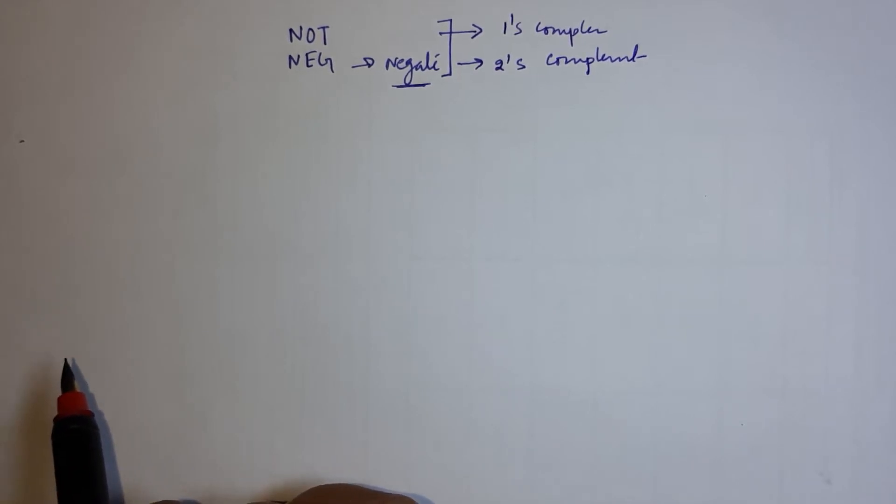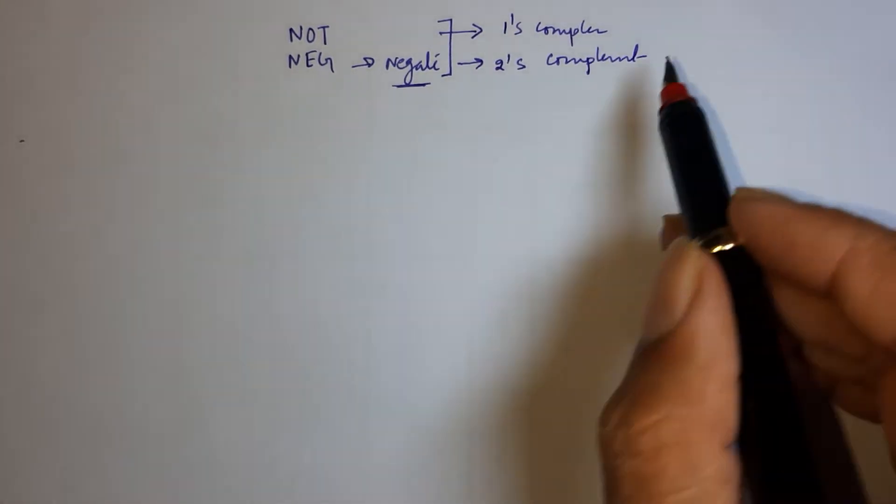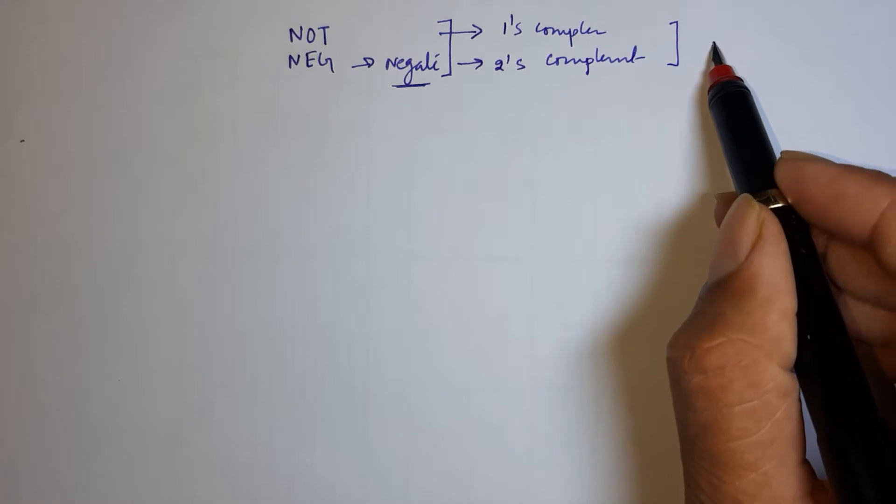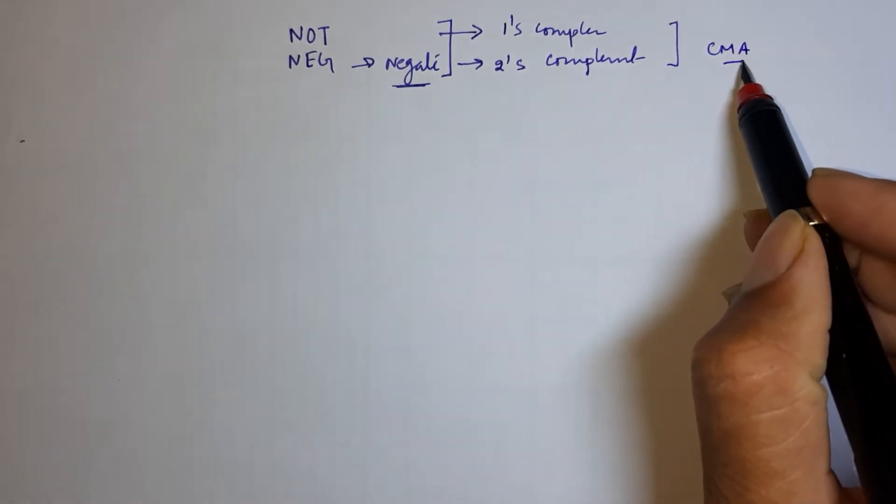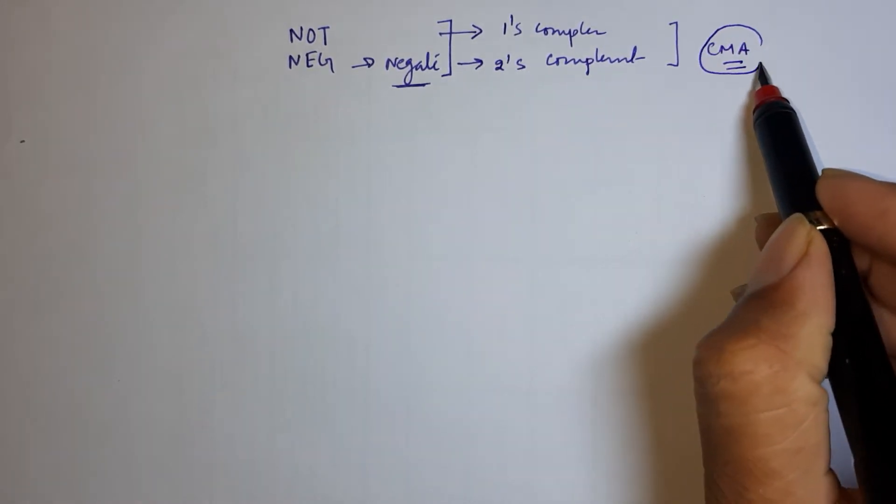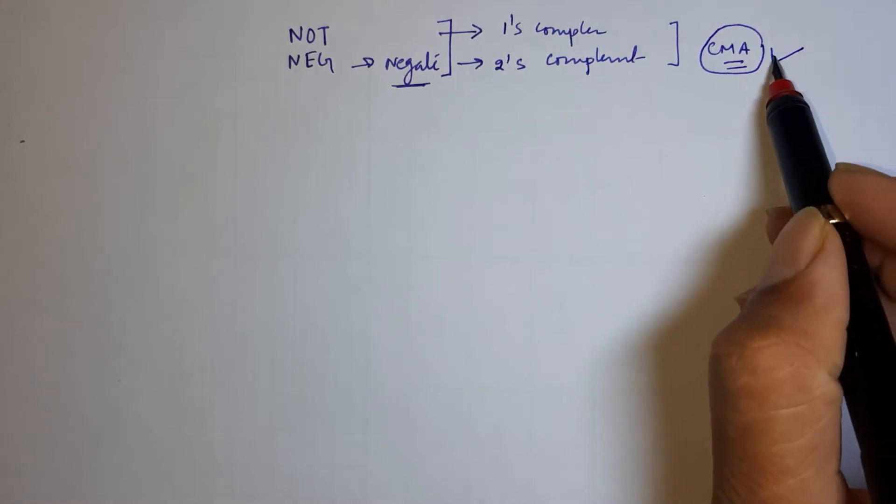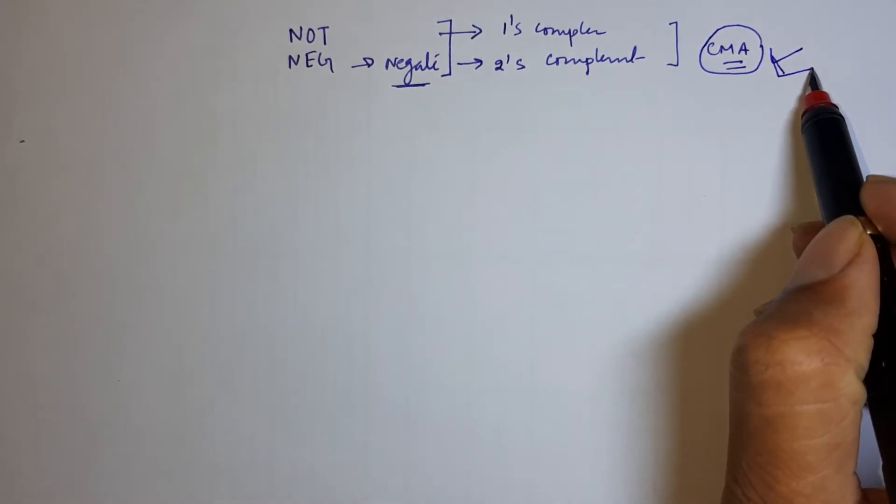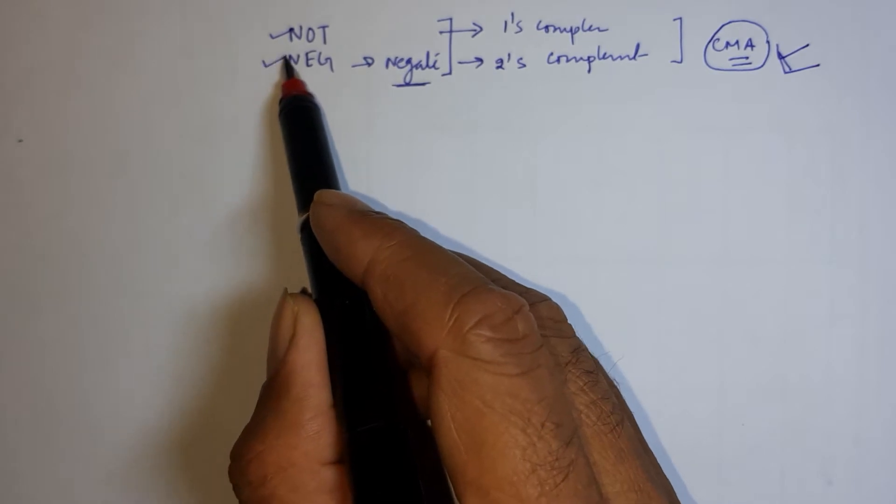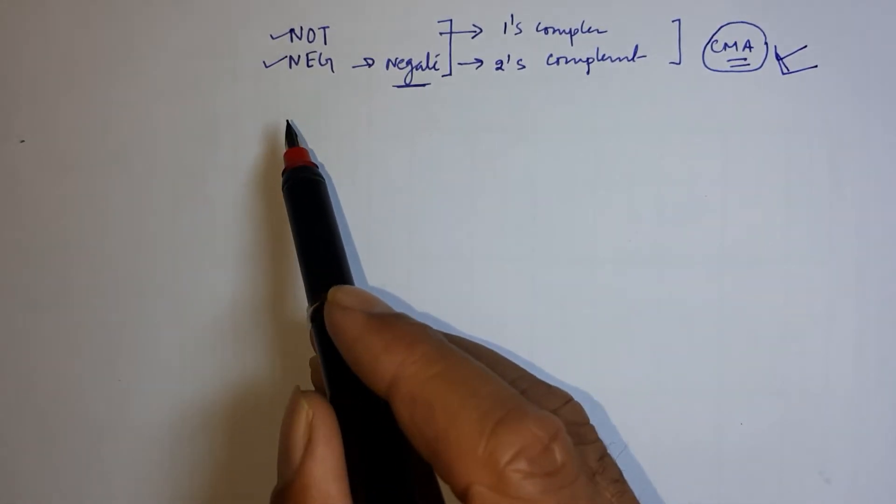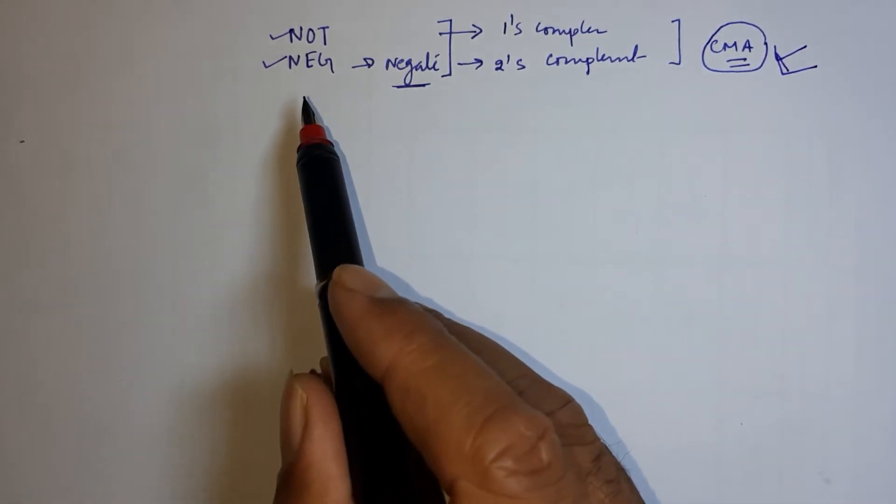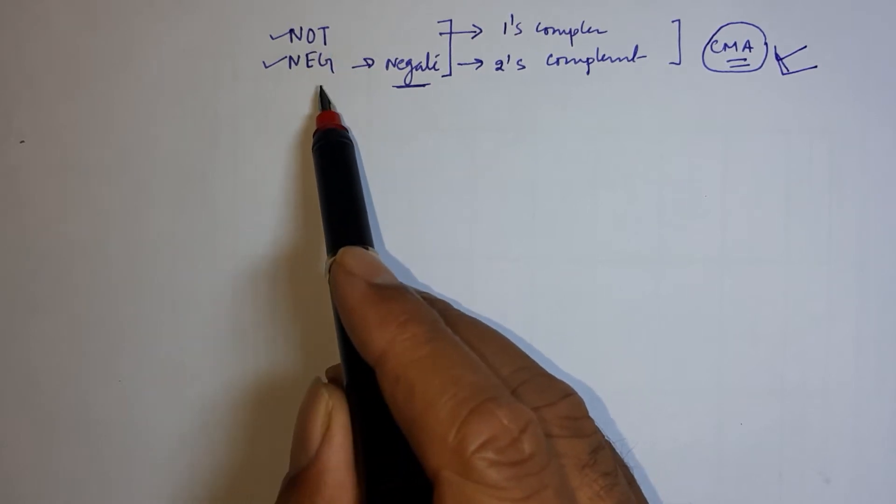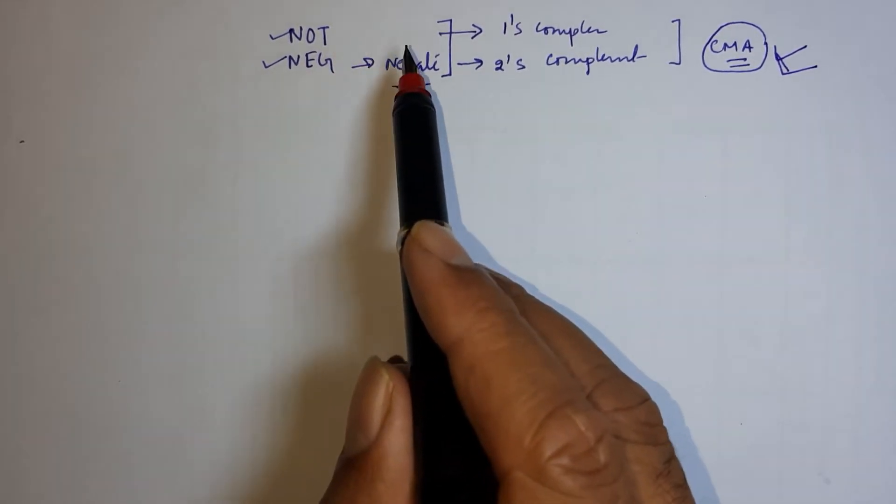When you compare with 8085 microprocessor, we have one instruction that is CMA, complement the content of accumulator. So basically this instruction works with only accumulator. But here NOT and NEG instruction work with whatever register or memory you are going to mention with this.